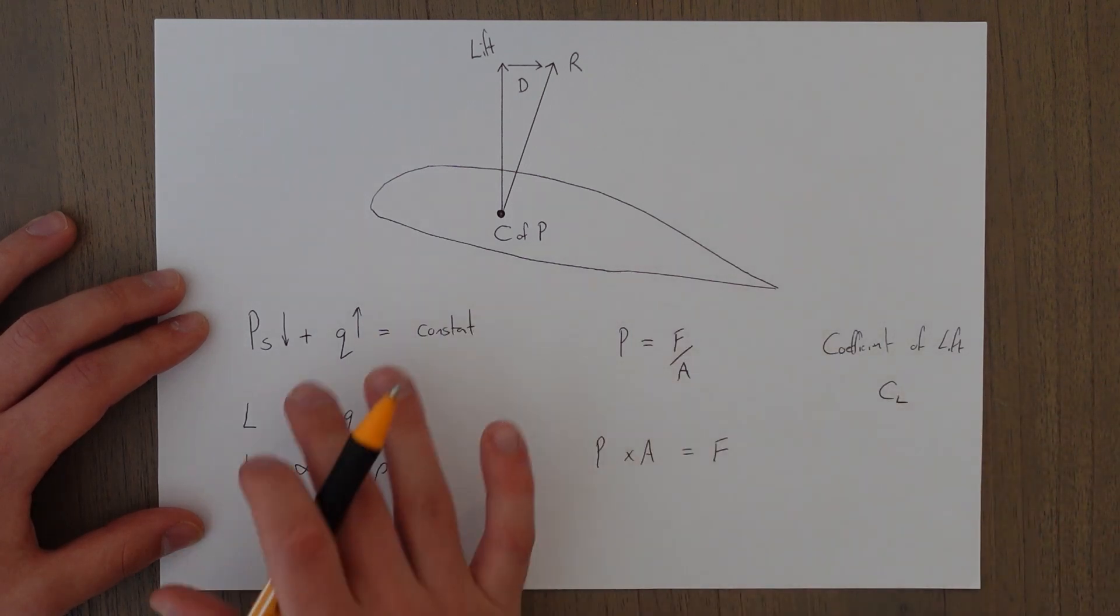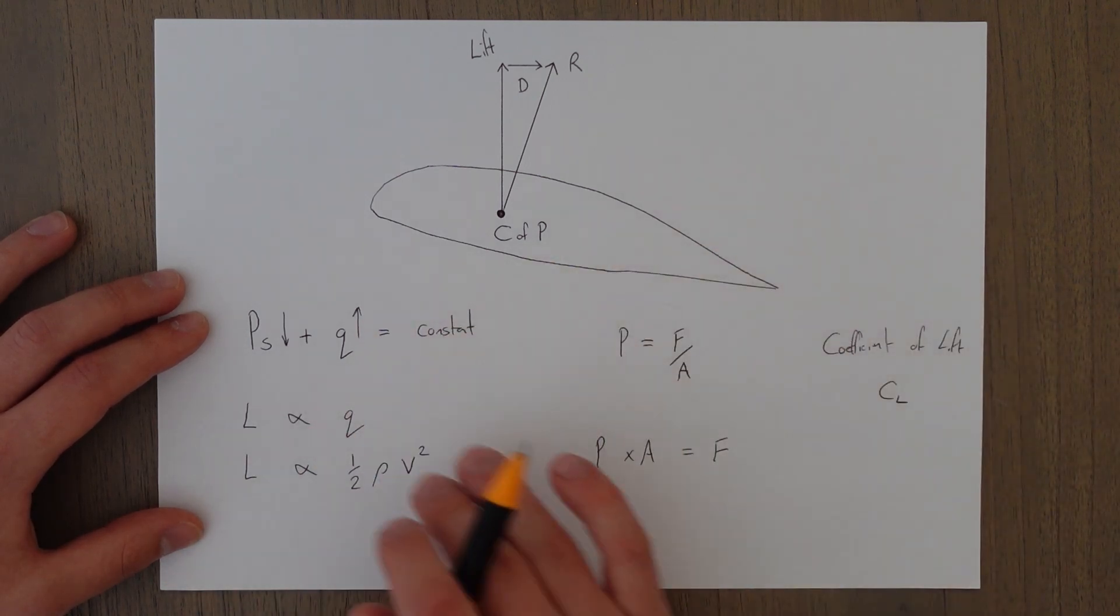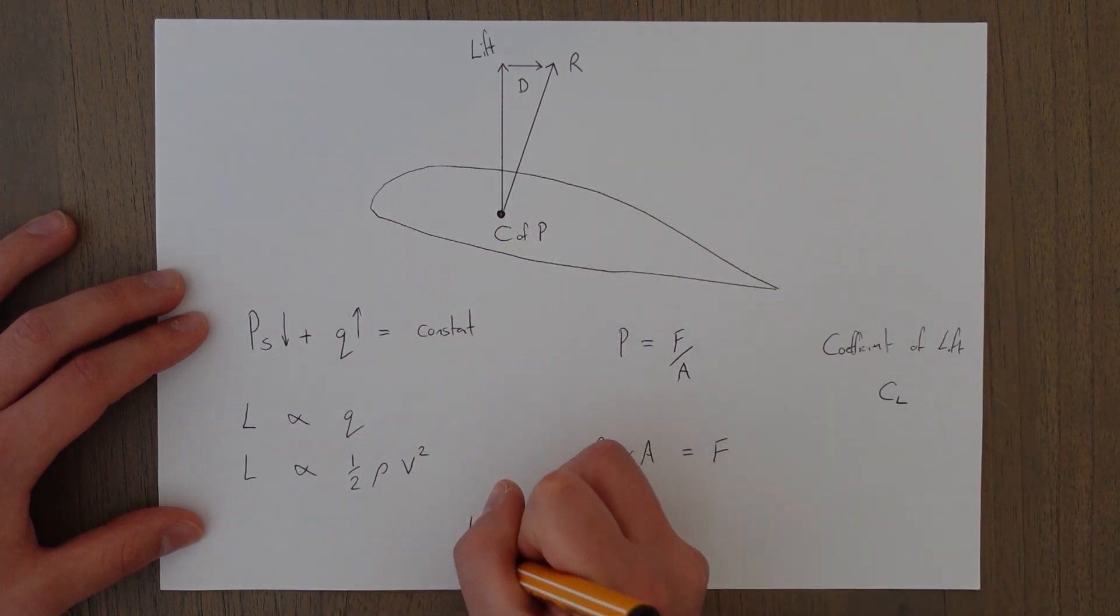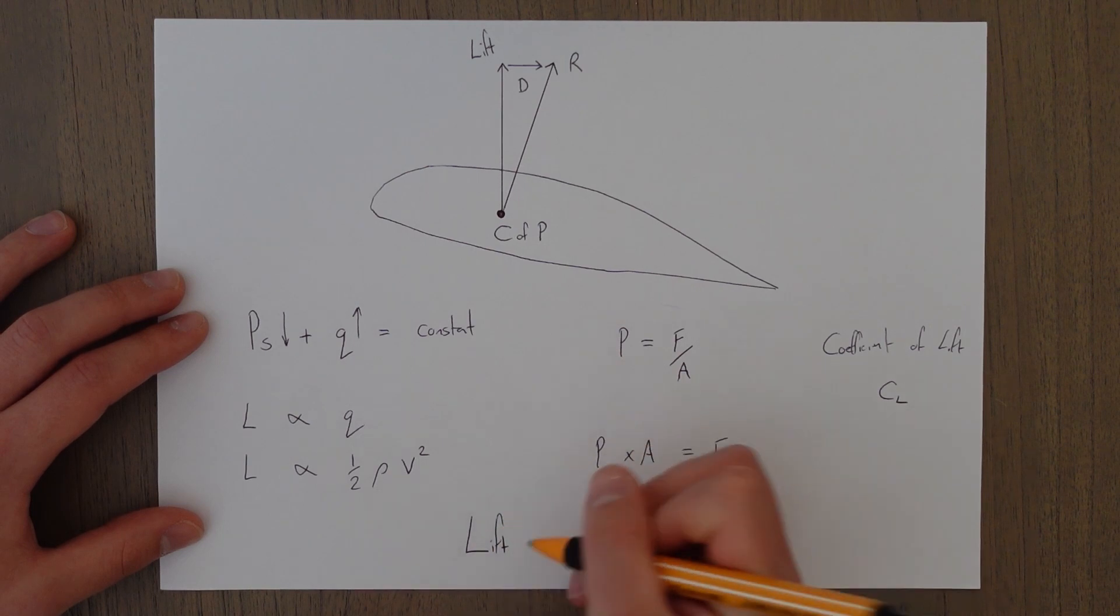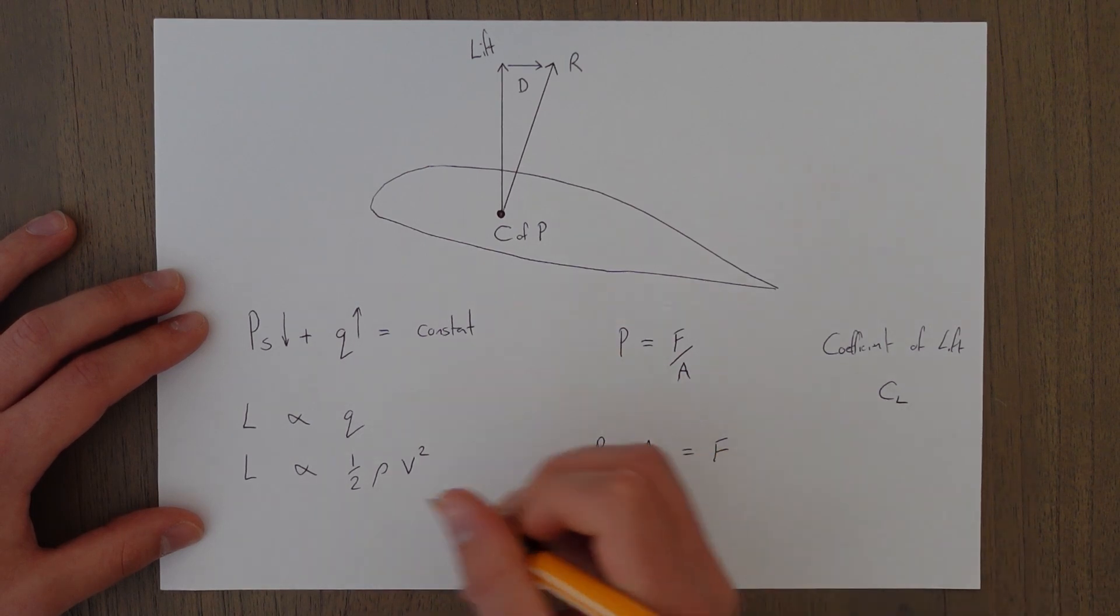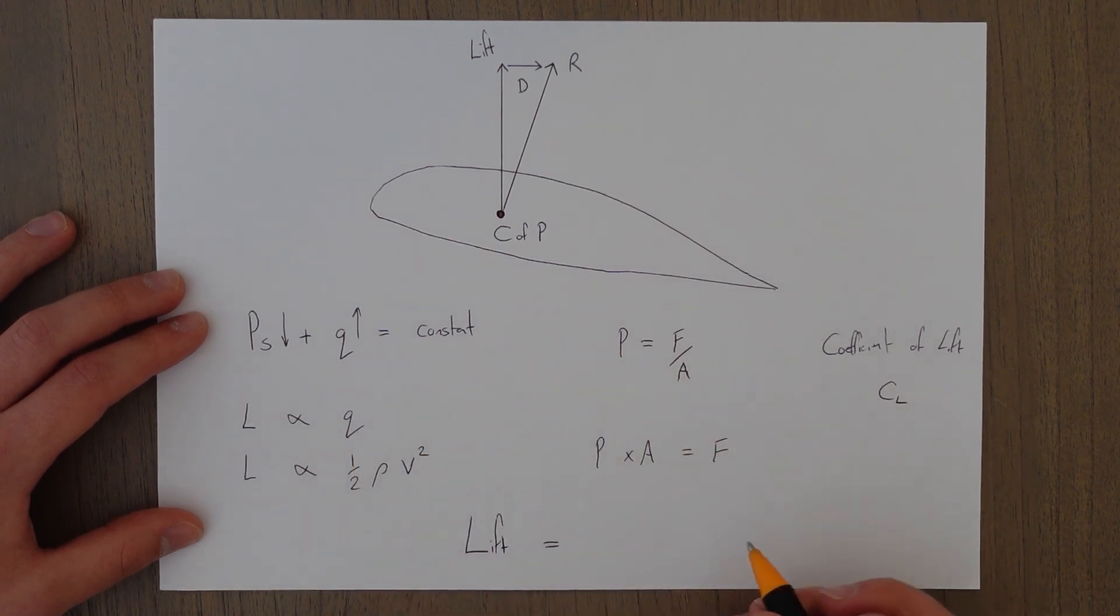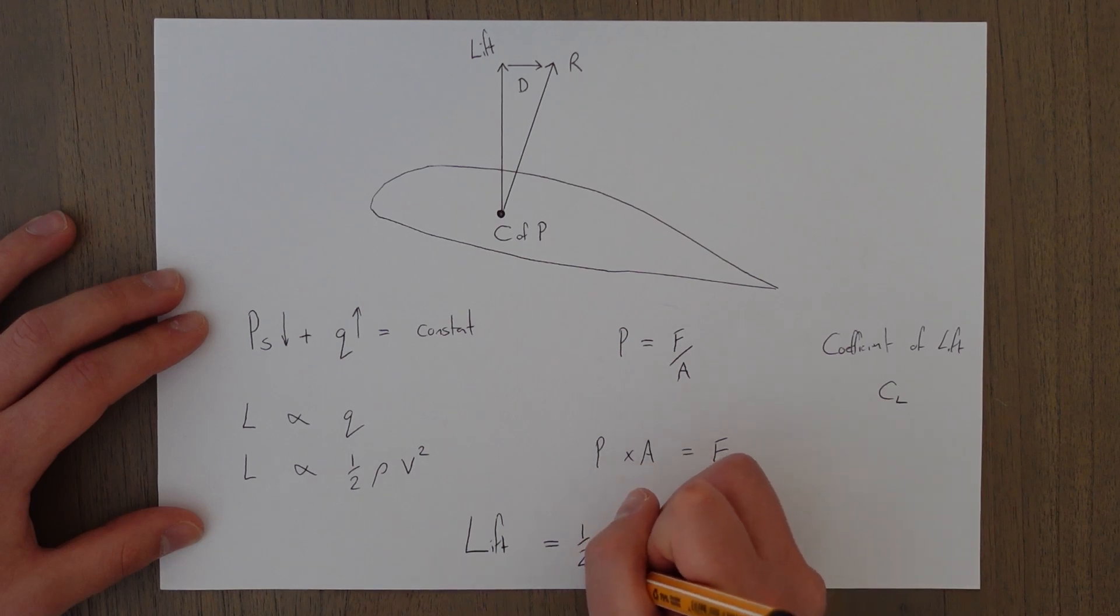If we combine all of these factors together we can come up with an equation for lift, which is lift equals—we know it varies directly with the dynamic pressure—a half rho v squared,